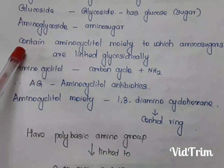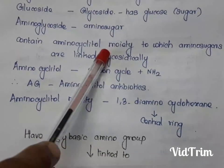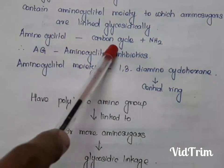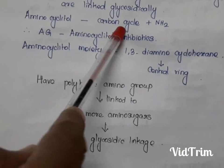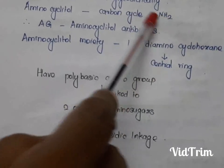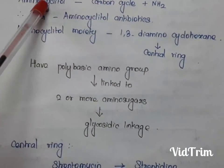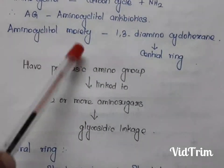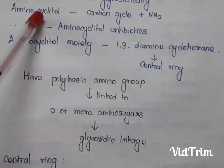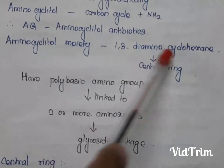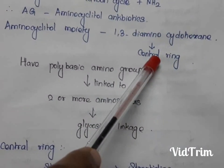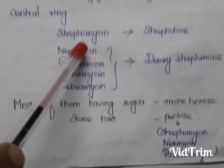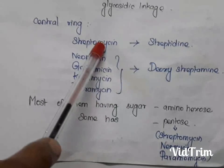Aminoglycosides have an aminocyclitol moiety, in which the amino sugars are linked glycosidically. Aminocyclitol means a carbon ring — a ring having only carbon — connected with an amino group. That is why aminoglycosides are otherwise called aminocyclitol antibiotics. The ring present in aminocyclitol is 1,3-diaminocyclohexane, which is the central ring present in aminoglycosides.